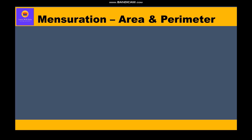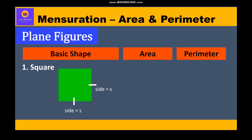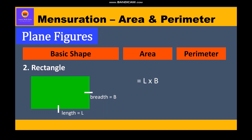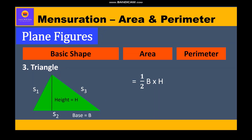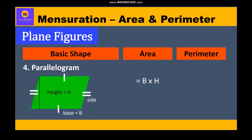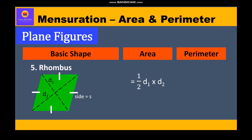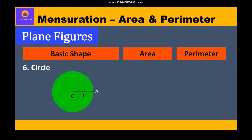Let us revise area and perimeter of some plane figures. Square: area = side²; perimeter = 4 × side. Rectangle: area = length × breadth; perimeter = 2(l + b). Triangle: area = ½ × base × height; perimeter = side1 + side2 + side3. Parallelogram: area = base × height; perimeter = 2(side + base). Rhombus: area = ½ × d1 × d2; perimeter = 4 × side. Circle: area = πr²; circumference = 2πr, where π = 22/7 or 3.14.